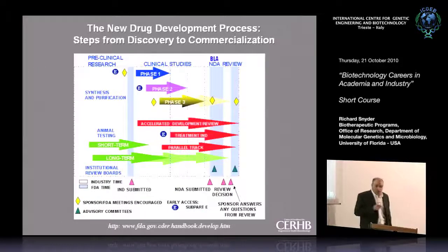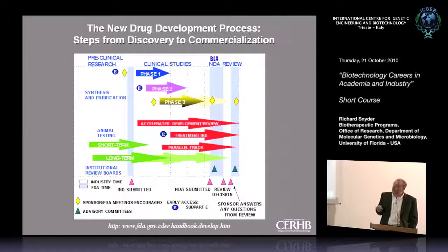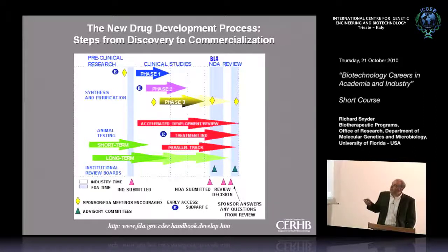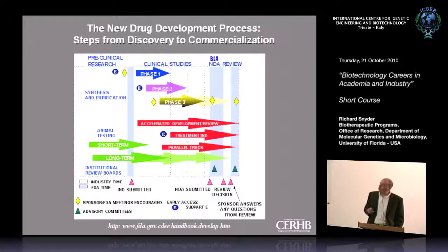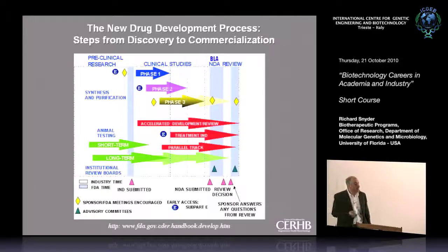This is taken from the FDA website. Starting with the lead, you do some animal testing, submit an IND — that's the request for permission to test in humans — then you do Phase 1, 2, and 3 human trials, and if everything works out, you submit a new drug application, which is a request to license and sell the product, and then you can start to sell it.